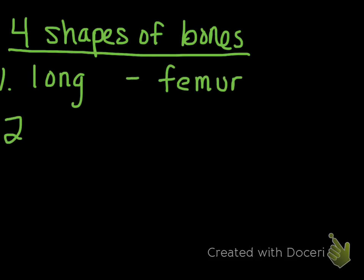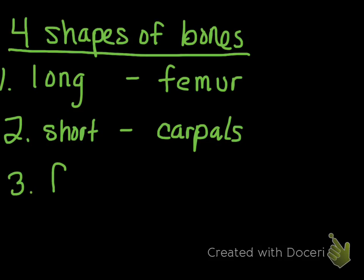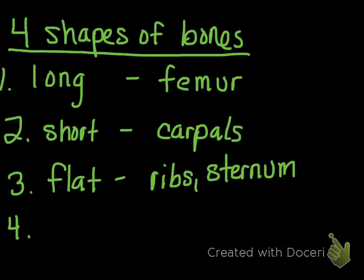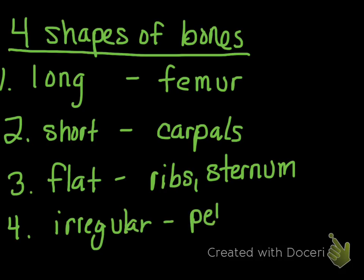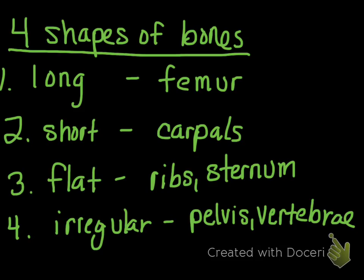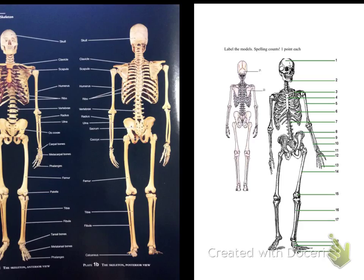There are four different shapes of bones. First, a long bone is longer than it is wide — for example, the femur. Second, a short bone is about as wide as it is long — examples include the carpals of the hands and the tarsals of the feet. Third, flat bones include the ribs or the sternum. Finally, irregular bones include the pelvis or the vertebrae. These are the four classifications of bone shapes.